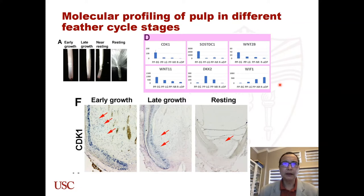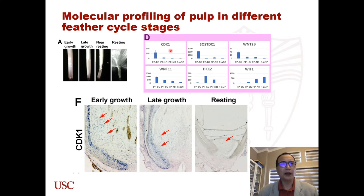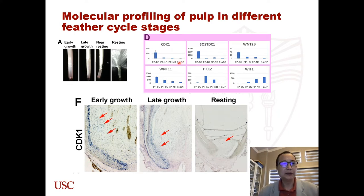We dissected the pulp at different regenerating stages and performed BrdU labeling in different stages. We found molecules expressed at different stages of the pulp. For example, CDK1 is highly expressed in the early-stage pulp, gradually reduces, and is expressed at very low levels at the resting phase. In situ hybridization data confirmed this result.